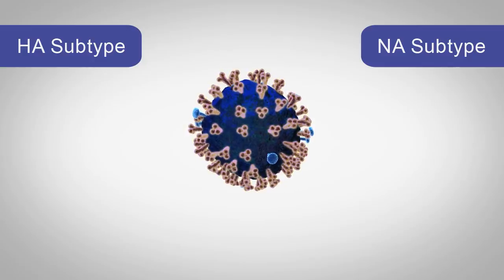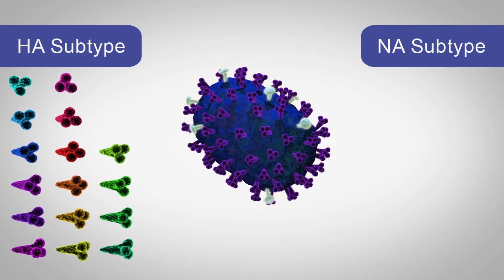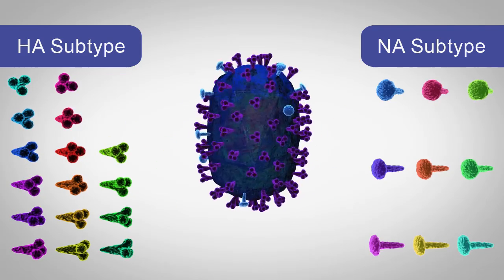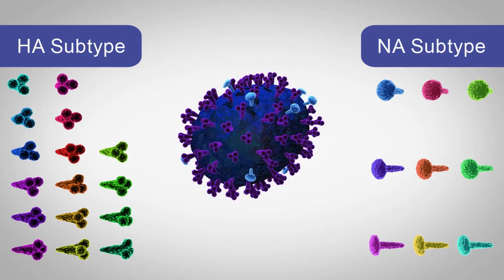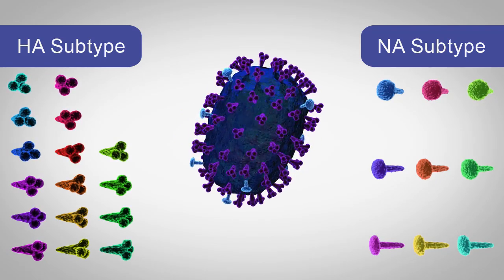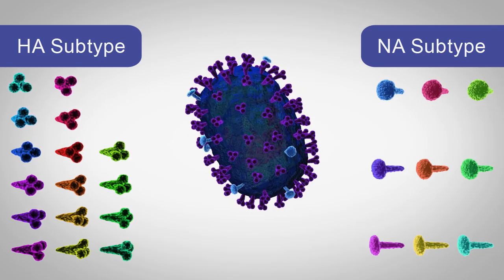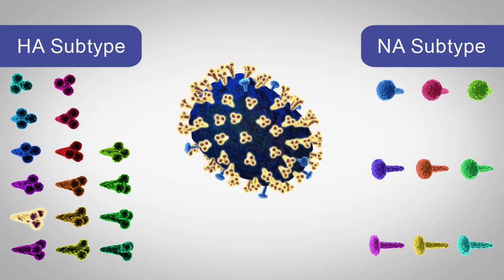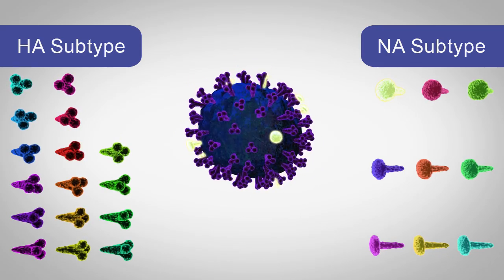There are 16 subtypes of HA proteins and 9 of NA. From these protein combinations, scientists name influenza A viruses. For example, an H5N1 virus contains hemagglutinin subtype 5 and neuraminidase subtype 1.